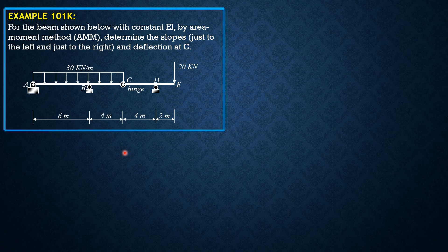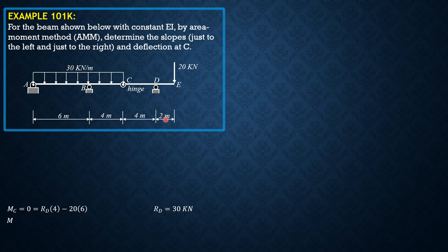Let me start by computing the reactions at A and D. Taking summation of moments considering segment CDE, summation of moments at C equals zero: R_D times 4 minus 20 times 6 equals zero. So R_D equals 30 kilonewtons upward, and the reaction just to the right of C is 10 downward.